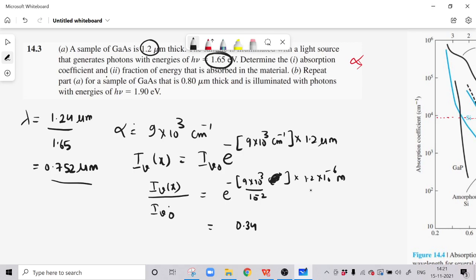Now we will calculate the absorbed fraction. Fraction absorbed is equal to 1 minus I nu x upon I nu 0, which is 1 minus 0.34. This is equal to 0.66. This is the fraction of energy absorbed in the material.